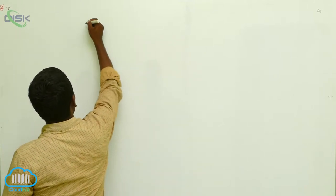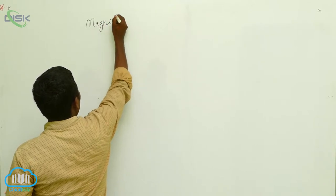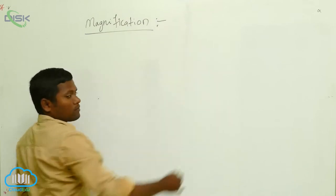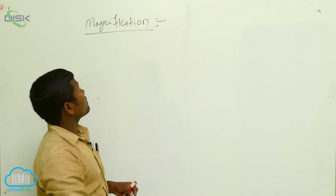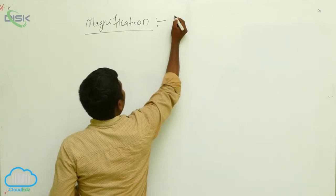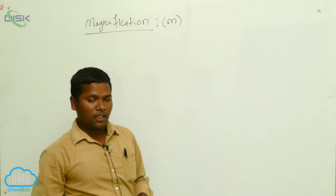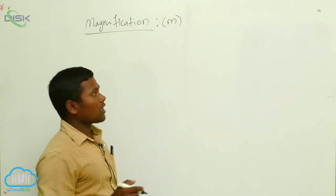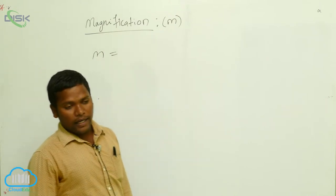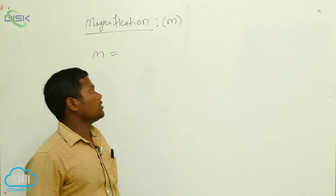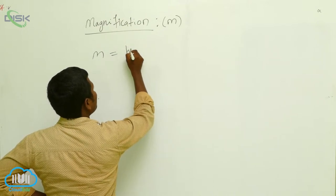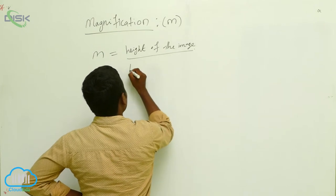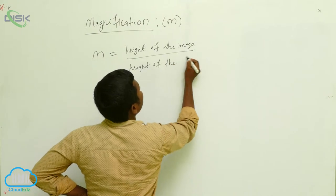Today we are going to discuss magnification. The first letter is small 'm', and whenever you see small m in the optics lesson, you have to remember that is magnification. According to our textbook, there is a small definition: magnification is the height of the image by the height of the object.